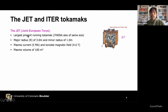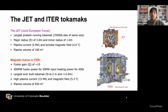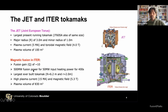I compared my results with JET and also made predictions for ITER, which is under construction in Cadarache in southern France. The general goal of ITER is to demonstrate the scientific and technological feasibility of fusion electricity production. It is designed to achieve a fusion gain Q=10, generating 500 MW of fusion power from 50 MW of input power for 400 seconds. ITER will be twice the size of JET with eight times the plasma volume.